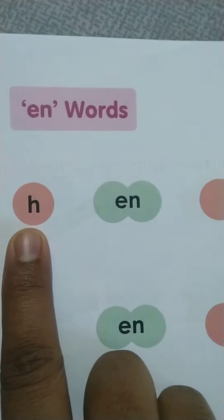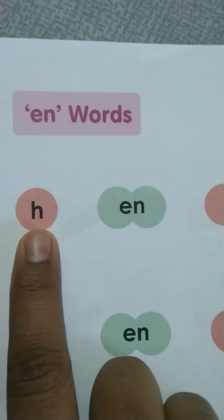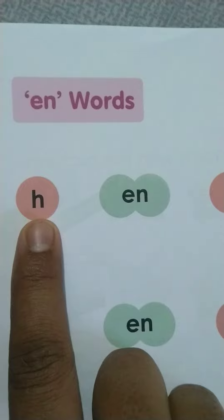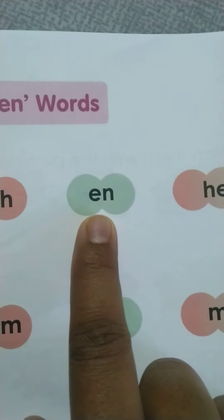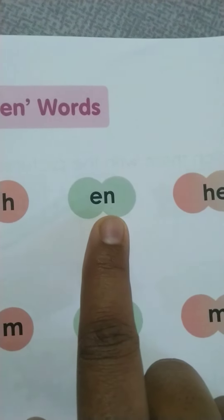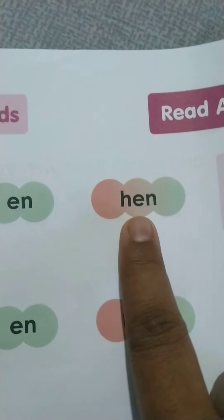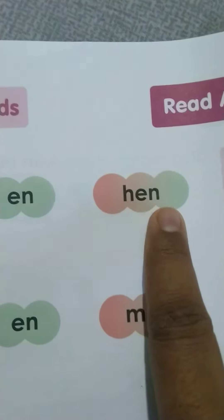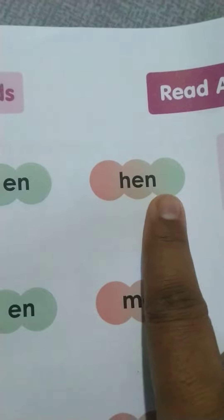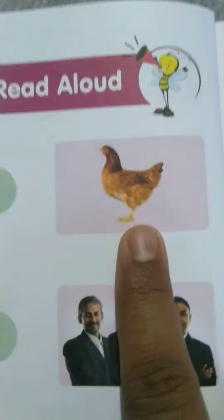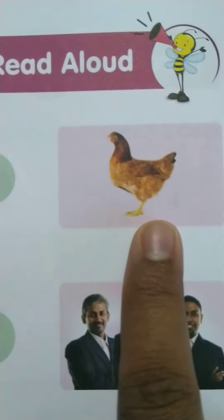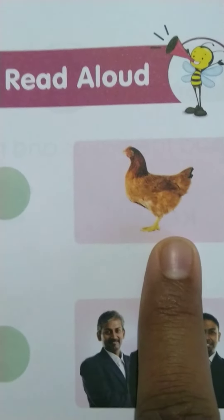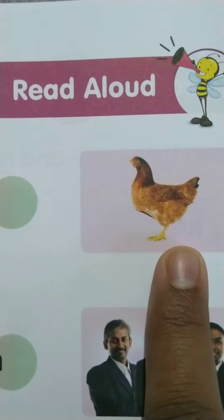How H comes — H, E, N: hen. This is a picture of hen. Hen is a bird, nice to see.